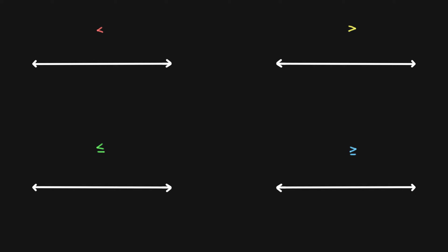Here I have four number lines and we have four symbols used in inequalities: less than, greater than, less than and equal to, and greater than and equal to. We're going to learn how to graph these symbols on a number line.